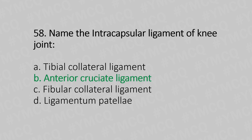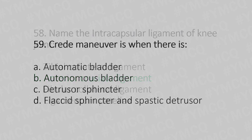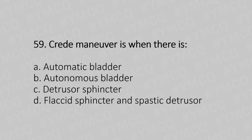Question 59: Crude manual is when there is — Option A: automatic bladder, Option B: autonomous bladder, Option C: detrusor-sphincter dyssynergia, Option D: flaccid sphincter and spastic detrusor. The answer is Option B, autonomous bladder.